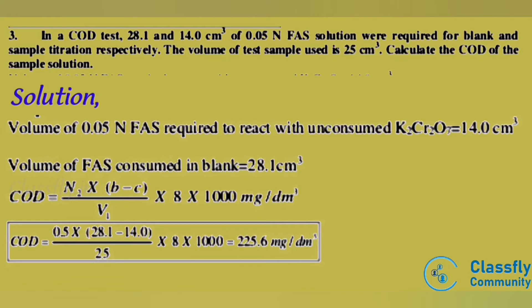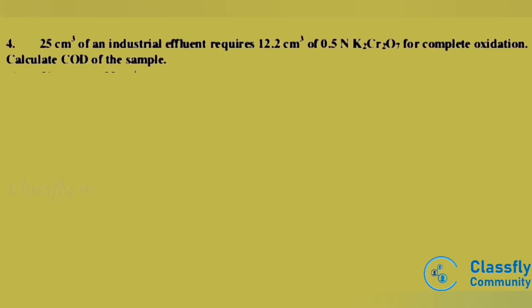COD = N2 × (B − C) / V1 × 8 × 1000 mg per dm³. Substituting the values: COD = 0.05 × (28.1 − 14.0) / 25 × 8 × 1000 = 225.6 mg per dm³.